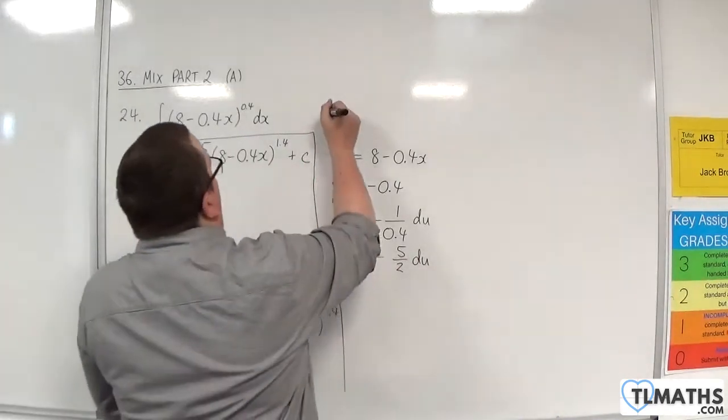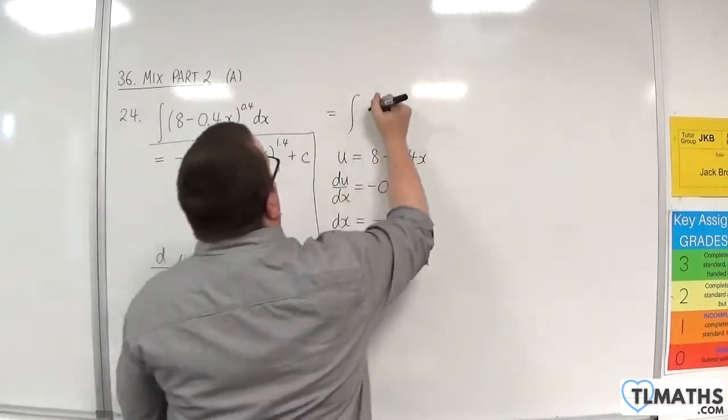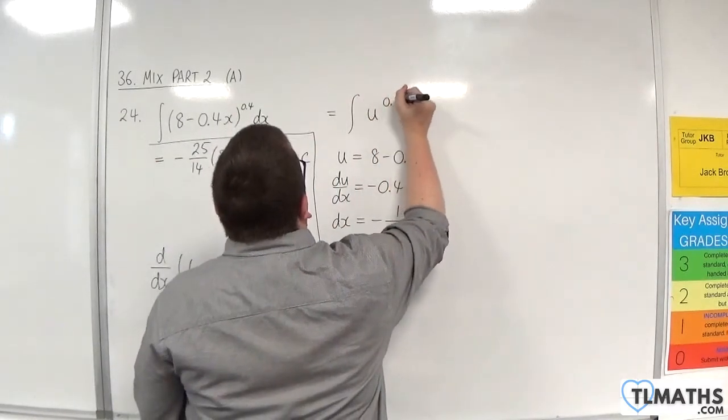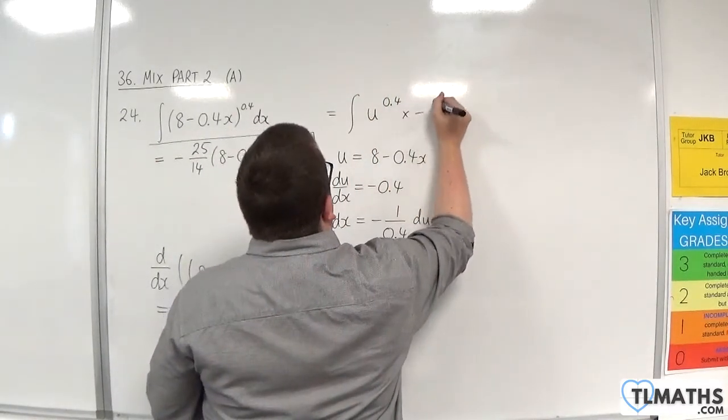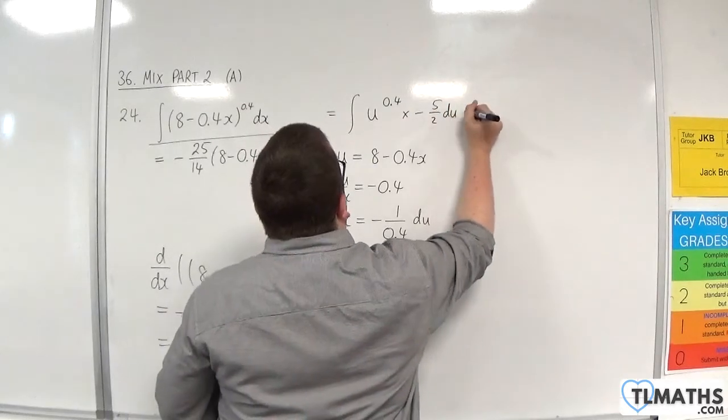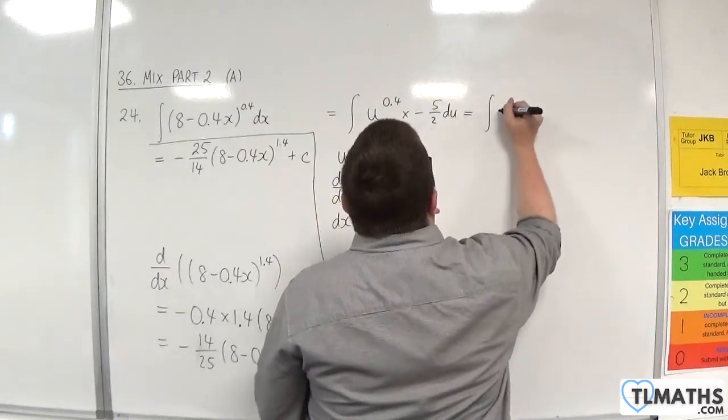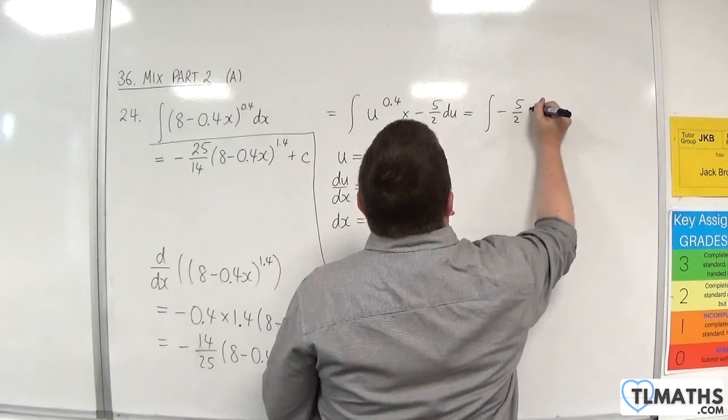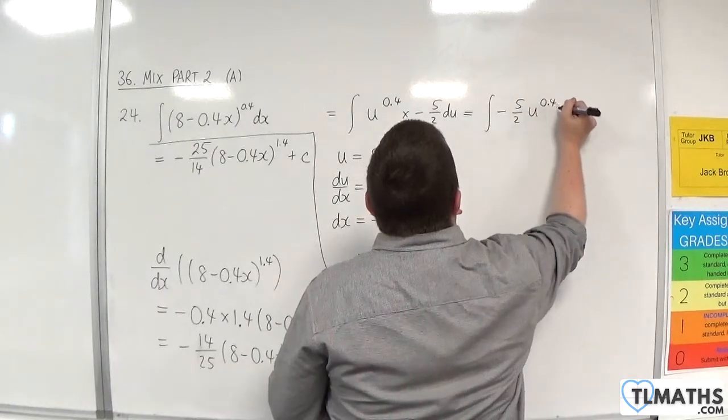OK, so this will be the integral of u to the 0.4 times by minus 5 halves du. Which, if we tidy that up, is minus 5 halves u to the 0.4.